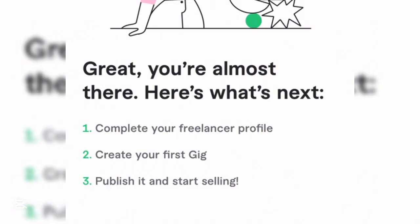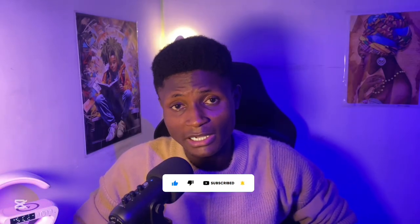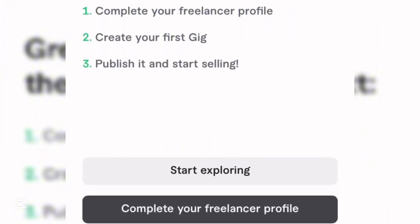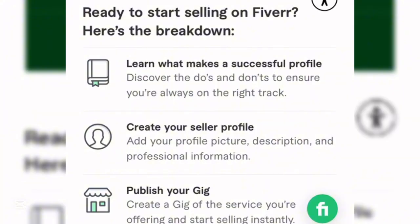You'll see a screen that says you're almost there. The next steps are: complete your freelancer profile, create your gig, publish it, and start selling. A gig is your niche — what you actually want to offer on your Fiverr account. Click 'Complete Your Freelancer Profile' to continue.